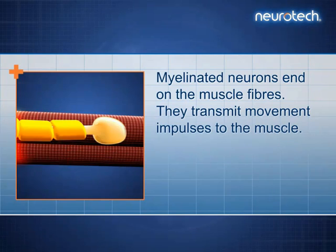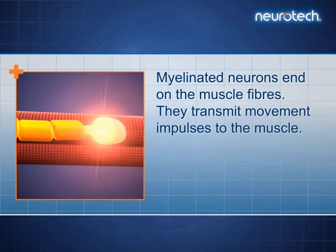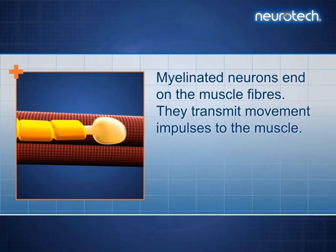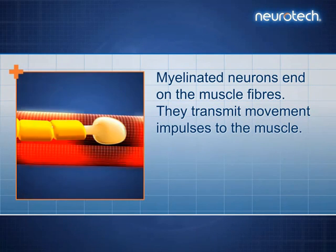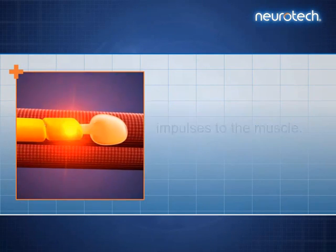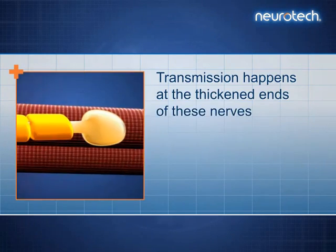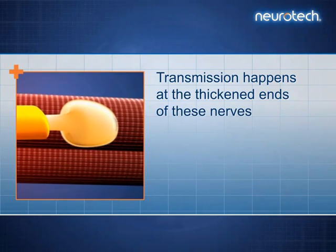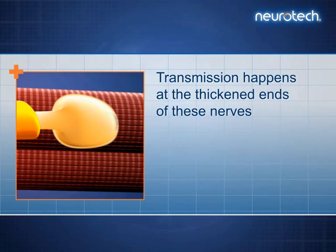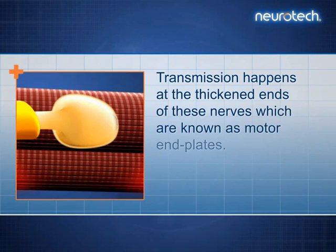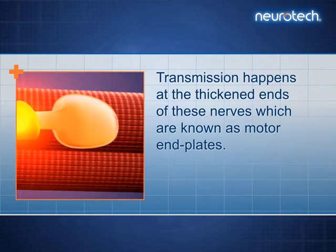Myelinated neurons end on the muscle fibres. They transmit movement impulses to the muscle. Transmission happens at the thickened ends of these nerves, which are known as motor end plates.